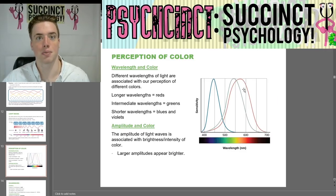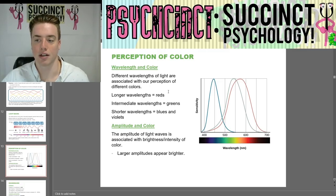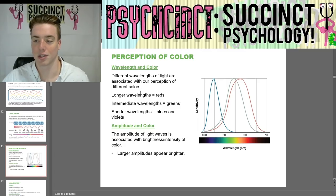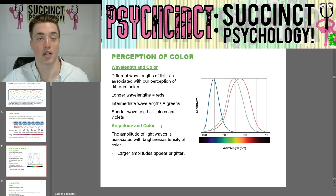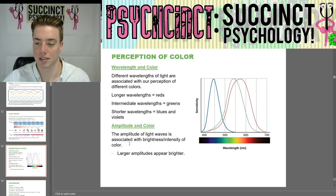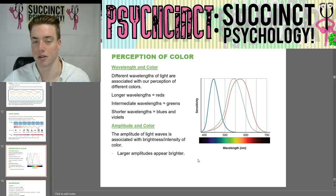For perception of color, different wavelengths of light are associated with our perception of different colors. Longer wavelengths equal reds, intermediate wavelengths are greens, and shorter wavelengths are blues and violets. The amplitude of light waves is associated with brightness and intensity of color — larger amplitudes appear brighter.